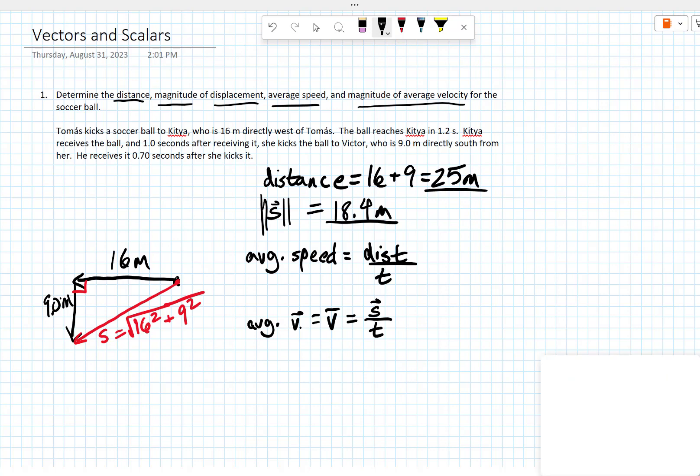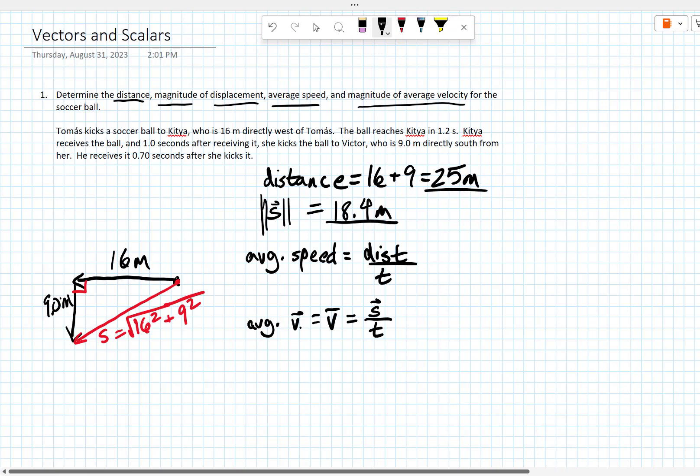We just need to find the time. The time is just going to be add up the total time for the whole trip. Well, we have 1.2 seconds for the first kick, 1.2 plus 1 second after receiving it, she kicks it again, plus 1 second, plus 0.70 seconds. So, our total time is just going to be 1.2, that's 2.2, plus 0.7 is 2.9 seconds.